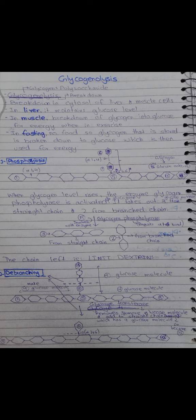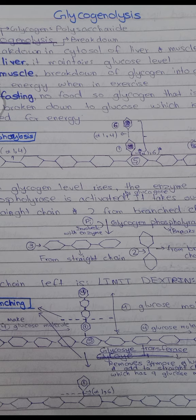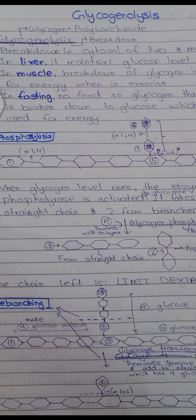In this debranching step, three glucose molecules are removed from the branch and transferred to the straight chain three times, which is how we go from 18 molecules down to nine in the straight chain. As a result, there are four molecules on each side and four on top. This is the beginning of debranching. The single branching glucose is removed by 1,6 glucosidase, and now the remaining glycogen molecule is ready to be broken down further.